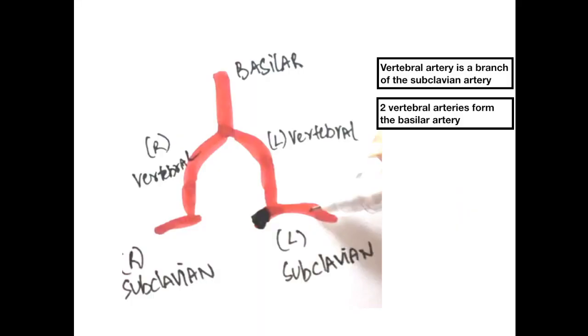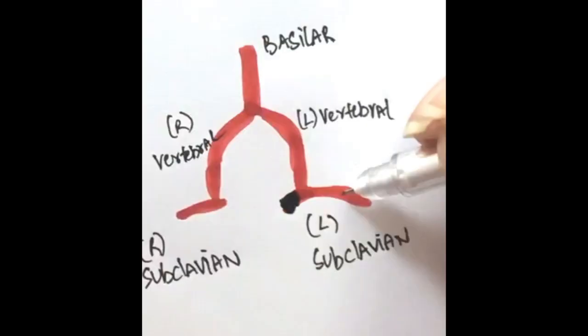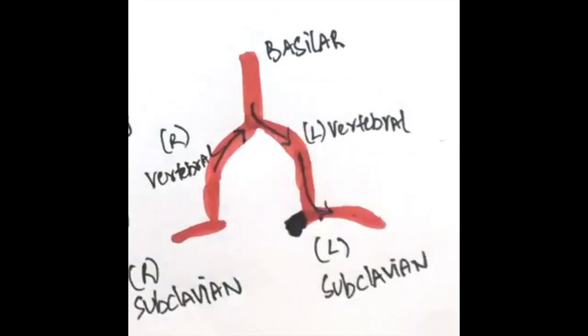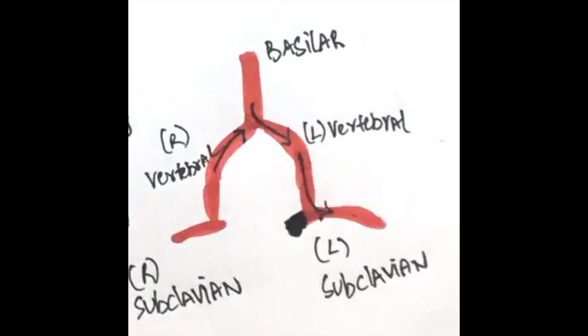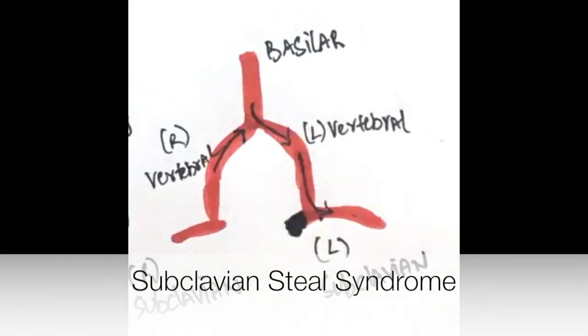The vertebral artery and the basilar artery supply the brain. Due to this block, there is very little flow here. So the resistance out here is very low, so blood will flow from the vertebral artery into the subclavian. This results in low blood supply to the brain and hence causes dizziness. It's almost like the left subclavian steals blood from the right vertebral and basilar arteries. That's why this is known as subclavian steal syndrome.